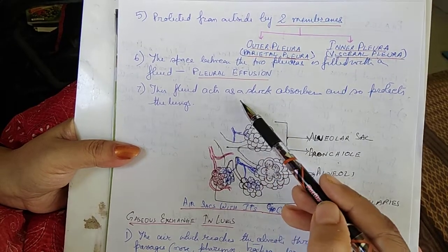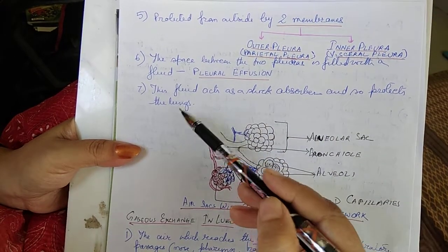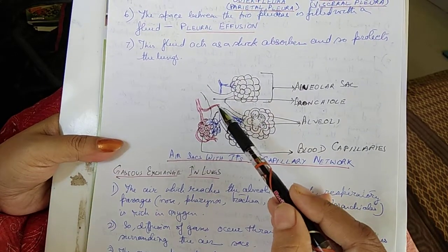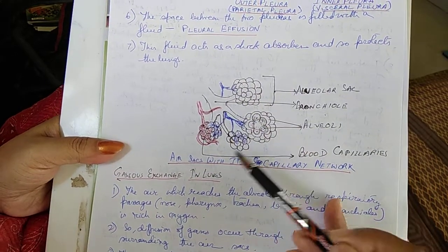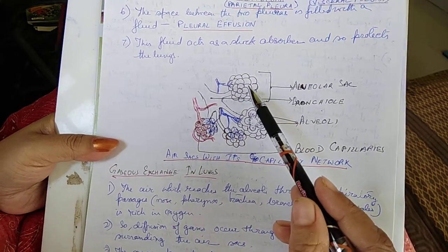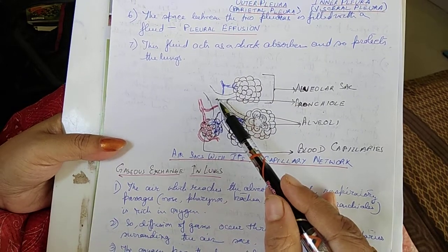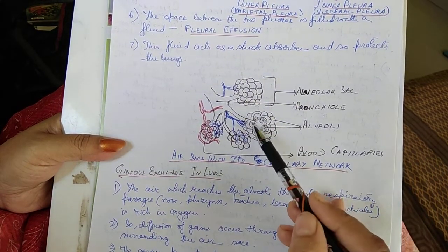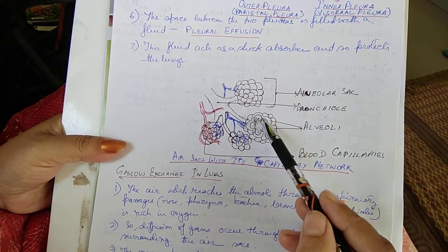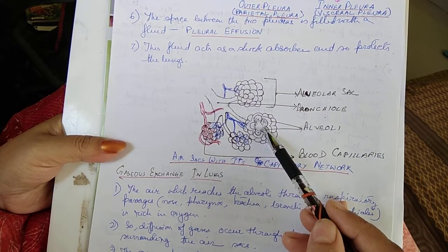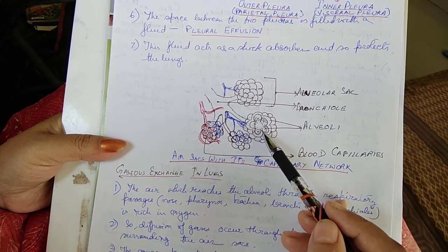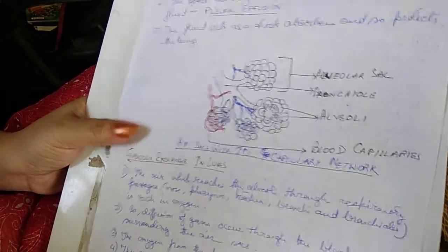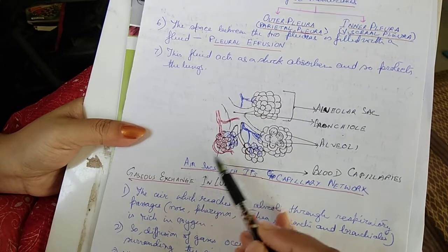The pleural fluid acts as a shock absorber and protects the lungs. Inside the lungs, we can see the alveolar sacs. The bronchi and bronchioles enter into the alveolar sacs. The alveoli have ciliated epithelium on their inner side, and there is a capillary network on the alveoli.